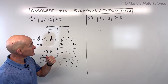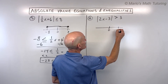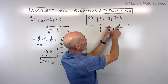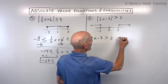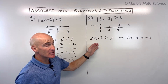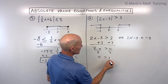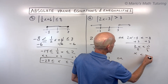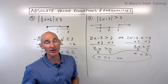For number six, |2x − 3| > 3: if you're greater than three units from zero, you could be less than negative three or greater than positive three. So split into: 2x minus 3 is greater than 3, or 2x minus 3 is less than negative 3. Solving the first: 2x > 6, so x > 3. Solving the second: 2x < 0, so x < 0. Our answer is x greater than three or x less than zero.